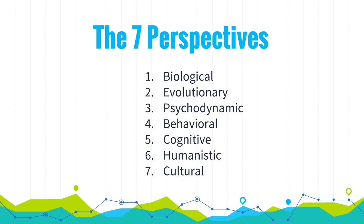Now we move on to the seven perspectives of psychology. Abe will give a theoretical definition and Frank will provide an example relating to kissing. First, the biological perspective examines how the body and brain enable emotions and sensory experiences, and how genes contribute to that. A biological psychologist would say kissing is a natural instinct of human emotion.